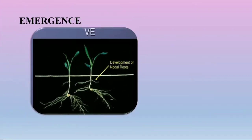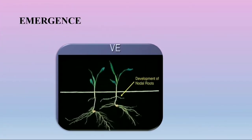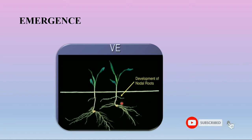Let us discuss about the emergence stage (VE). You can observe in the image the emergence of the plant. The coleoptile leaf is the first leaf visible; this leaf will be shorter than the lateral emerging leaves and has a rounded tip. The growing tip of the plant should be 1 to 1.75 inches below the soil surface and the seminal roots begin growing from the seed. The permanent nodal root system will begin developing at this point. If the seed is planted too shallow, the root system will have a difficult time becoming established.